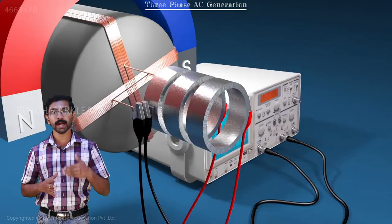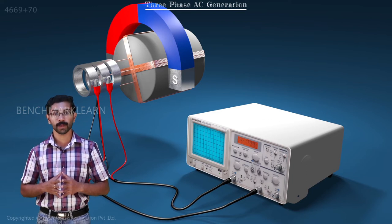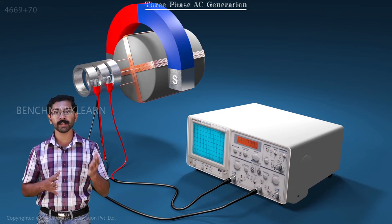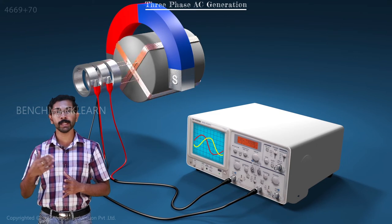Now, we add a second coil perpendicular to the first coil. One end of each coil is connected to a common slip ring. The other two ends are connected to two separate slip rings. When we rotate the armature,